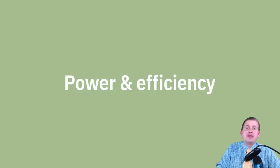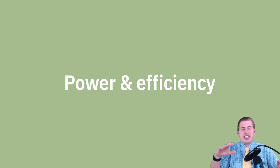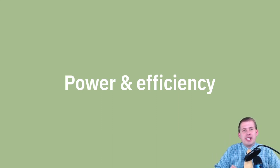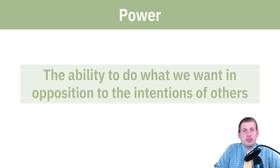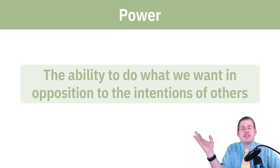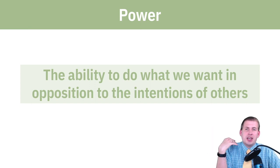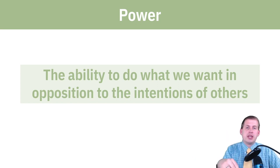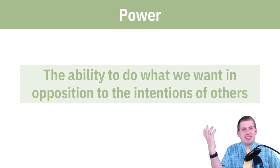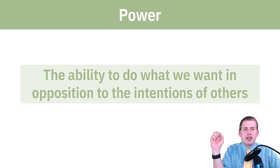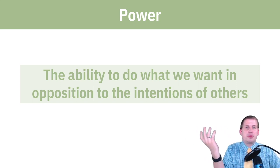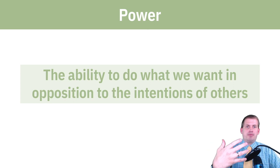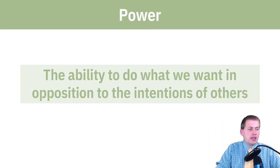We've talked a lot about payoffs, game theory matrices, and actors choosing things. One thing we've left out of this discussion is the notion of power — who gets to make these choices. There are a billion different definitions of power depending on what social science you're studying, but in economics, power is essentially the ability to do what you want in opposition to the intentions of others — how well you can get your own preferences put in place.